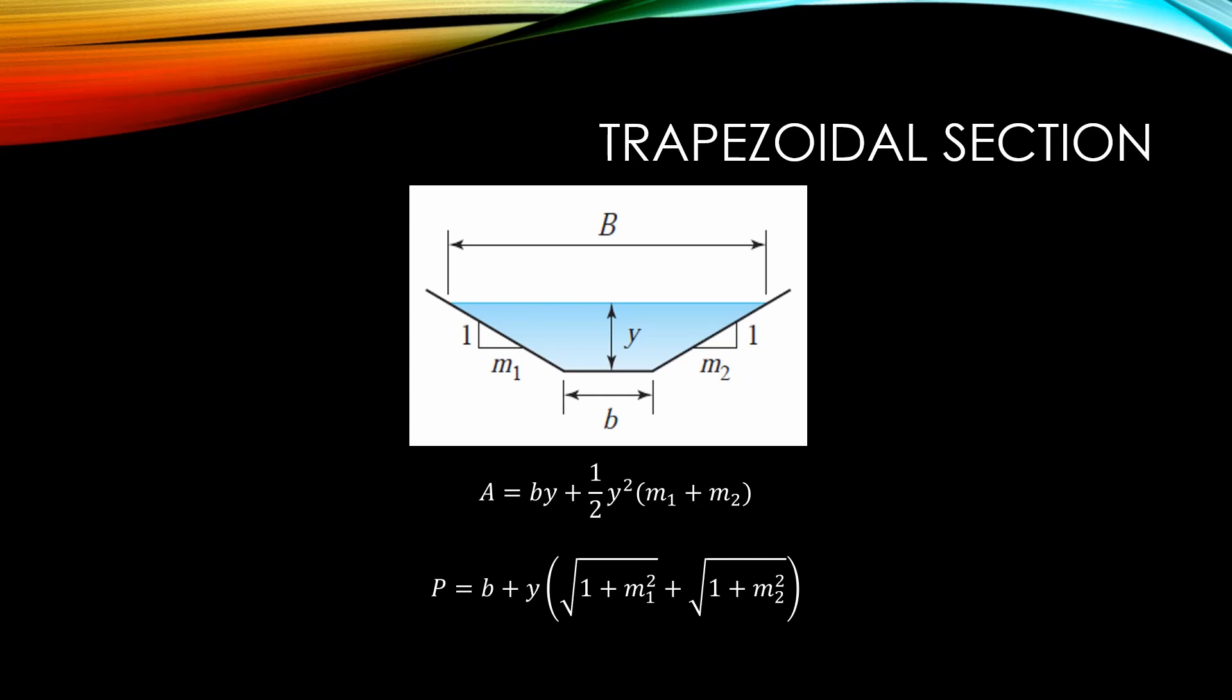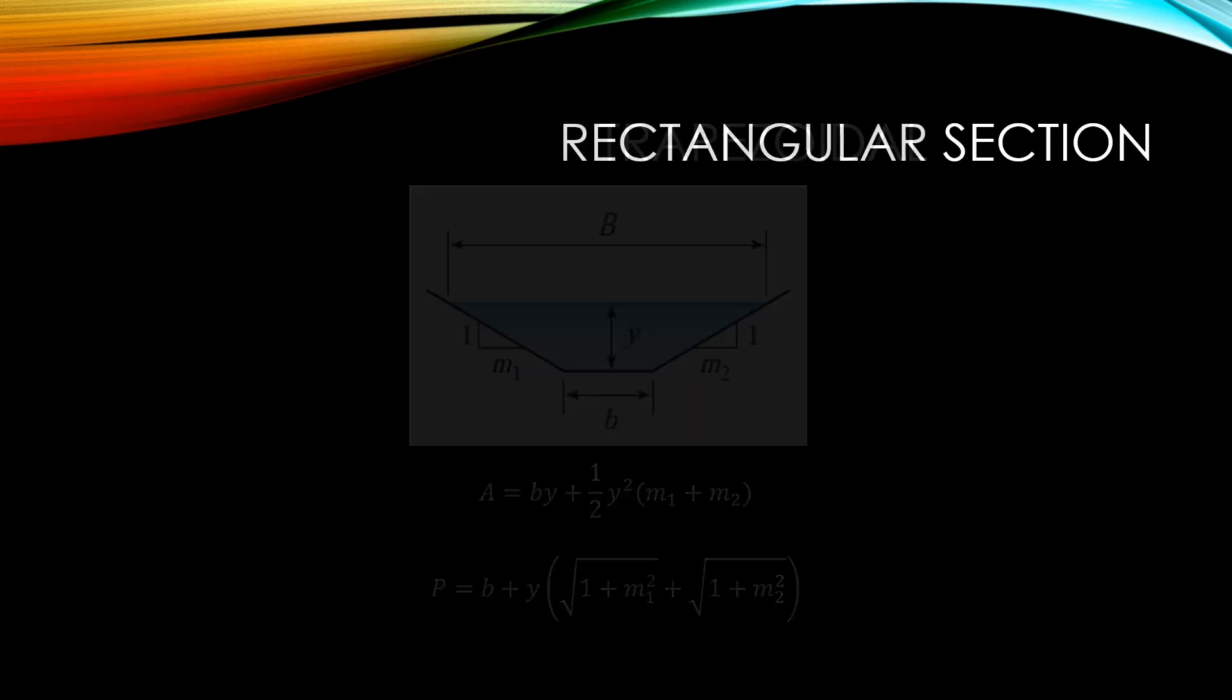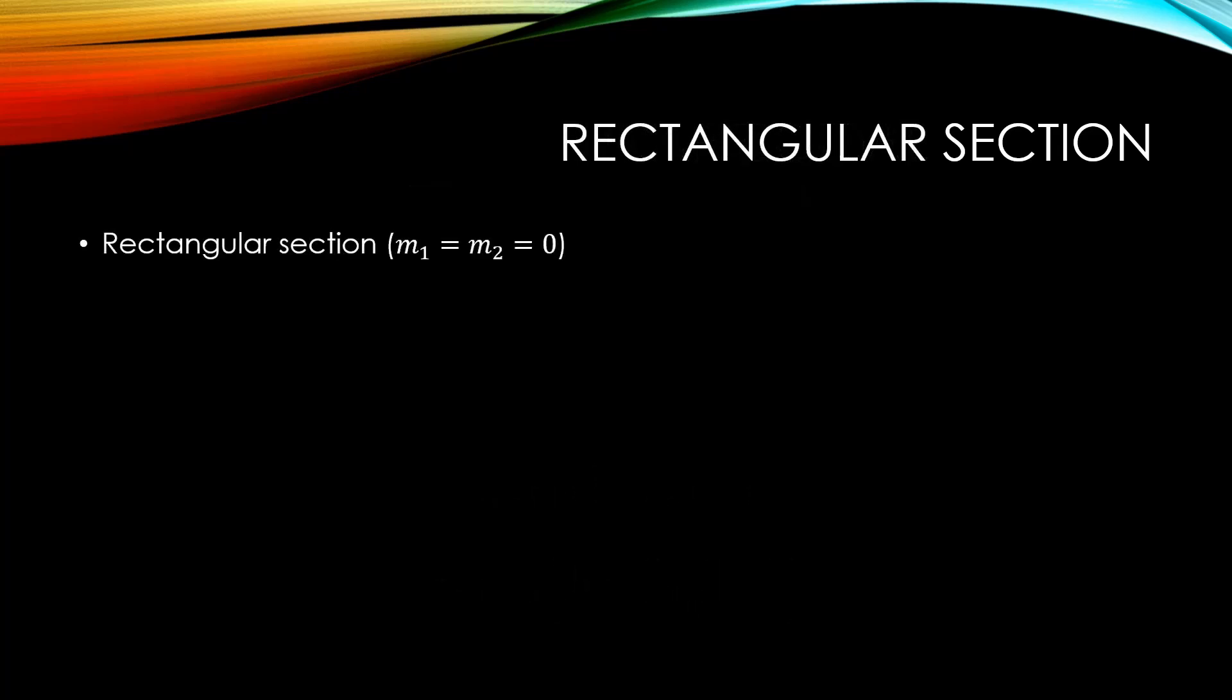Notice that if we know the equations for area and wetted perimeter of a trapezoidal section, we can also find the area and wetted perimeter of a rectangular section and a triangular section. In the case of a rectangular section, the side slopes are equal to zero.